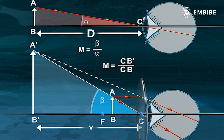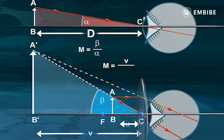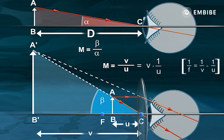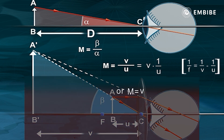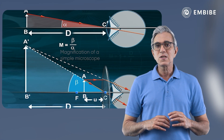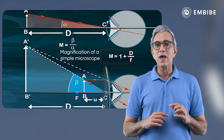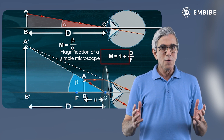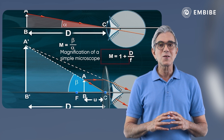Here, CB' = V and CB = U. Hence, M = V / U, or M = V × (1/V − 1/F), which equals 1 − V/F. Also, since V = −D, M = 1 + D/F. Therefore, the smaller the focal length, the larger is the magnifying power.